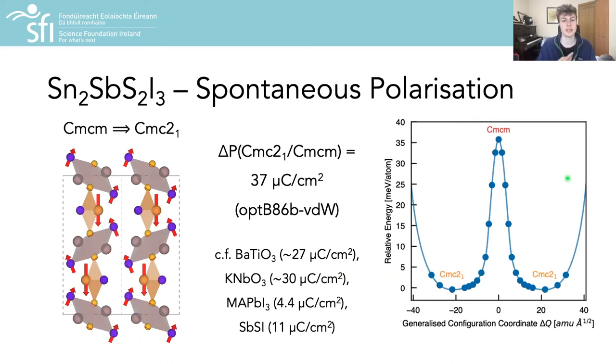Visualizing the Cmcm to Cmc2₁ distortion, we see that it corresponds to oppositely charged ions moving in opposite directions, therefore resulting in a relatively strong lattice polarization of 37 µC/cm², placing this material next to the likes of ferroelectric oxide perovskites such as barium titanate and potassium niobate in terms of polarization strength.